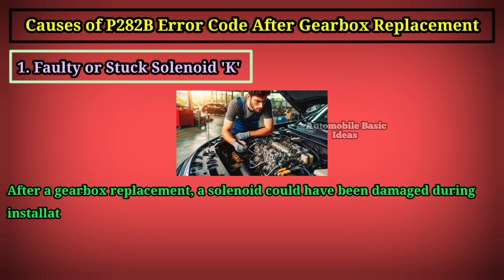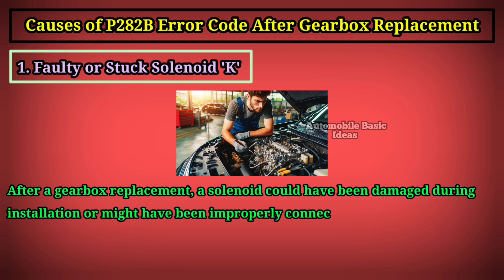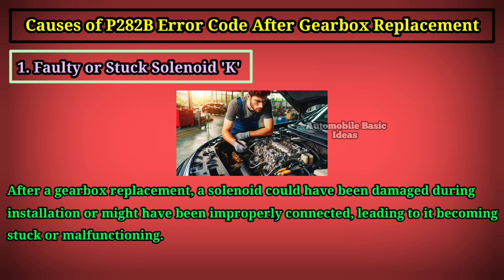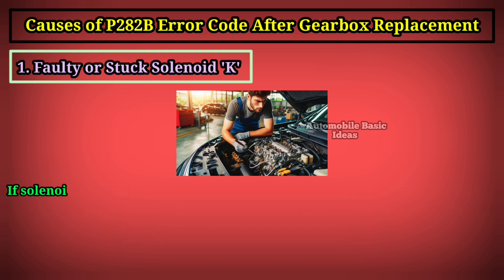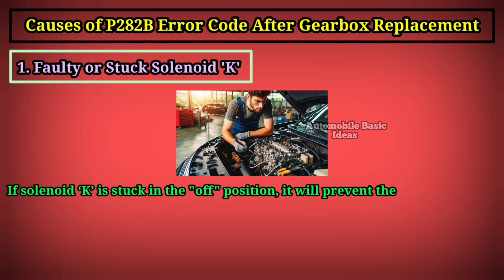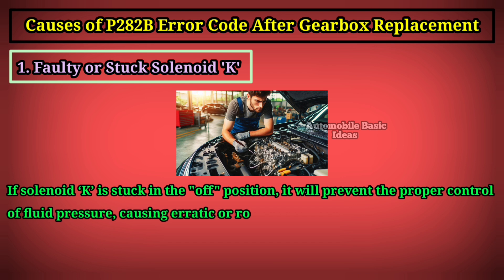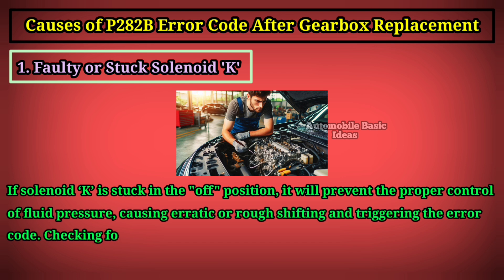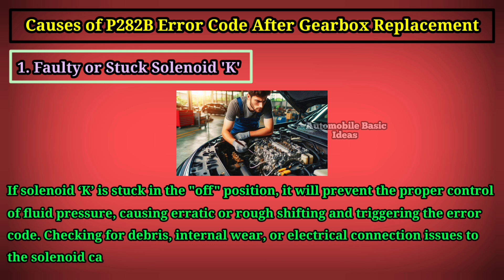After a gearbox replacement, a solenoid could have been damaged during installation or might have been improperly connected, leading to it becoming stuck or malfunctioning. If solenoid K is stuck in the off position, it will prevent the proper control of fluid pressure, causing erratic or rough shifting and triggering the error code. Checking for debris, internal wear, or electrical connection issues to the solenoid can help diagnose this issue.